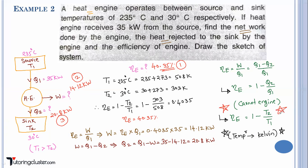This is a new and important concept — you will have to use this formula many times. It comes from the efficiency calculation of the Carnot engine. There are no such engines that actually exist; it is hypothetical. The maximum efficiency an engine can produce is equivalent to the Carnot efficiency: 1 minus T2 over T1, where T2 is the sink temperature and T1 is the source temperature.